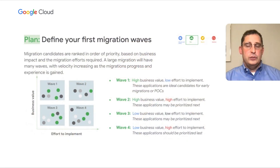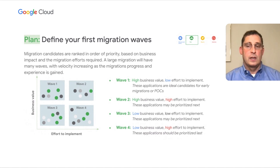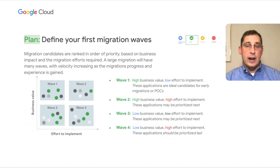After completing the assessment stage, you enter the planning phase. Google has a planning methodology that helps make initial progress quickly, reduce risk, and stay on budget. Stratazone can help you arrange migration candidates in order of priority based on business impact and the migration effort required. A large migration will have many waves, with velocity increasing as the migrations progress and experience grows in your organization. By categorizing your workloads into waves based on these two parameters, you can iterate, learn from those iterations, and then optimize your process.